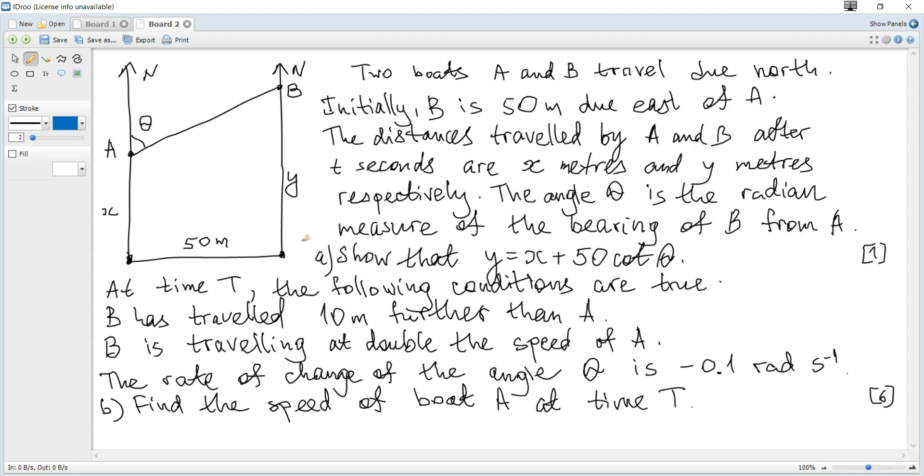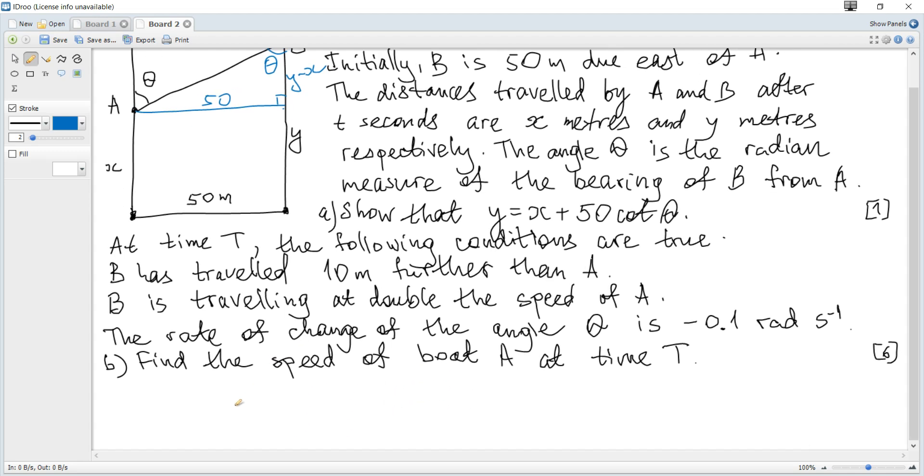Show that y is x plus 50 multiplied by the cotangent of theta. To show that we can consider this triangle. It's a right angle triangle. And theta is also here and this distance is y minus x.